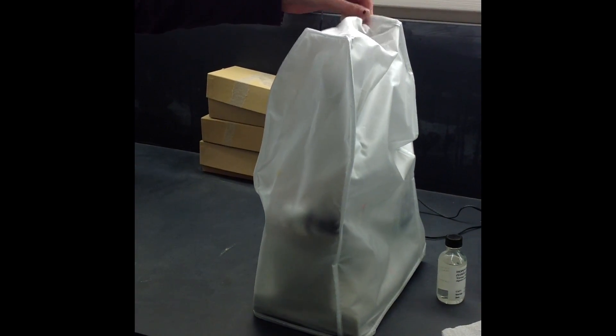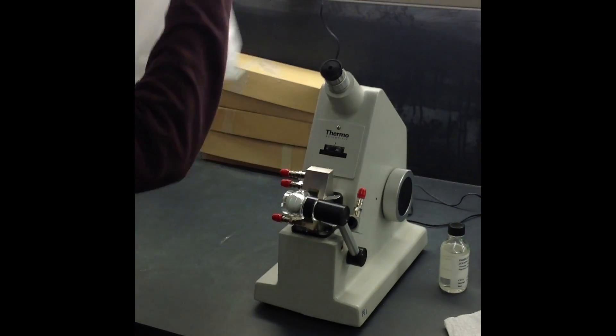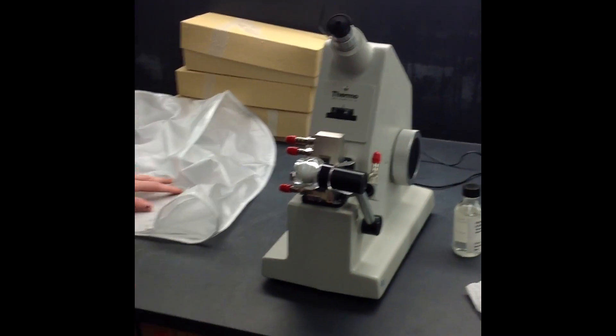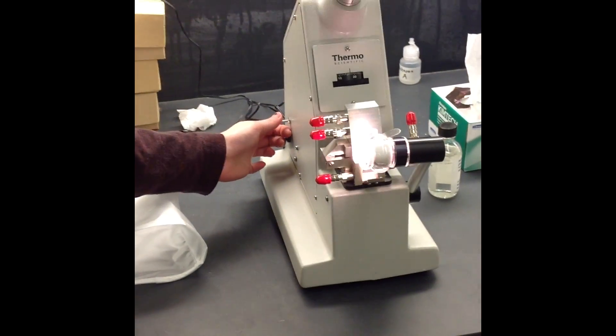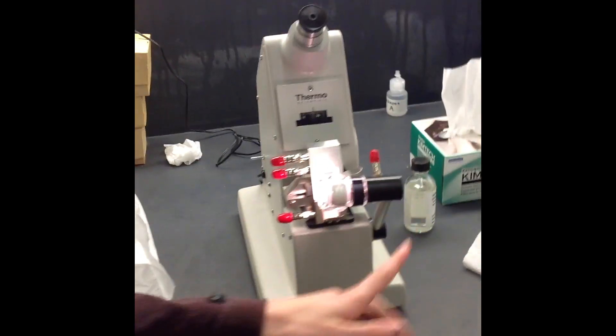First, I'm going to remove the dust cover and here's the refractometer. The first thing I'm going to do is turn it on by flipping the switch down here, and as you can see, this is your lamp.